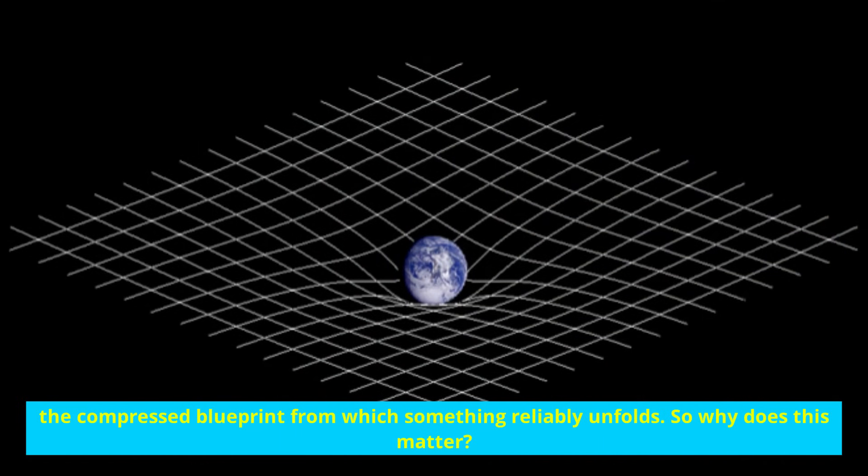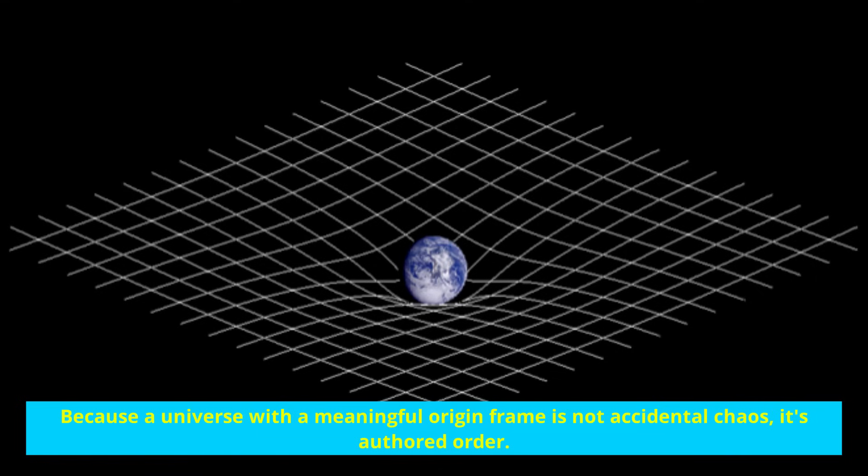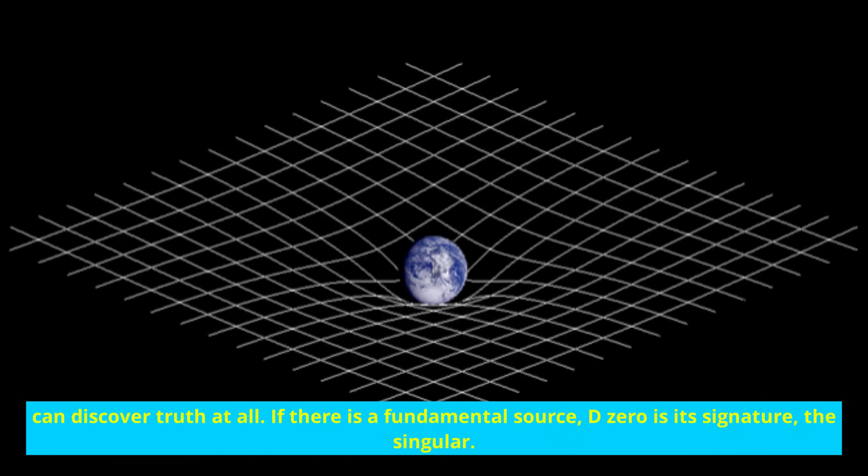So why does this matter? Because a universe with a meaningful origin frame is not accidental chaos, it's authored order. D zero explains why reality computes, why equations travel well, and why intelligence can discover truth at all.